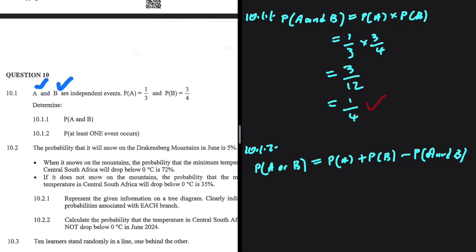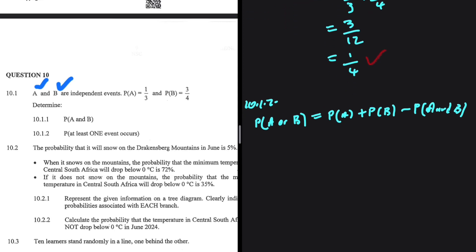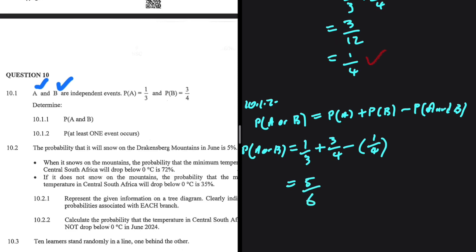The probability of A or B is equal to the probability of A plus the probability of B minus the probability of A and B. Note that 10.1.1 was just setting us up to answer 10.1.2. So the probability of A or B equals 1/3 plus 3/4 minus 1/4, which equals 5 divided by 6. That's 10.1.2.